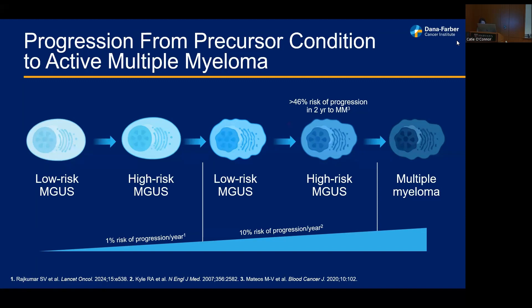In low-risk or high-risk smoldering myeloma, notably, as the percent of plasma cells increases in the bone marrow, the percent chance of risk of progression does increase — noted to be about 10% per year chance of change to active myeloma. However, this is not fully representative, as individuals with higher-risk smoldering myeloma may have up to a 40 to 50% risk of progression within the first two years of diagnosis.